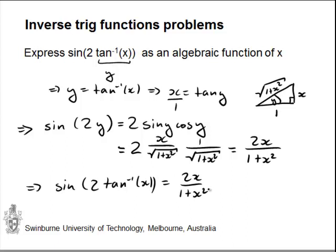So as you can see, these questions aren't very difficult. You just have to wisely choose y, put the relationship between x and y into a triangle, and then see how you can simplify the outside trigonometric function.